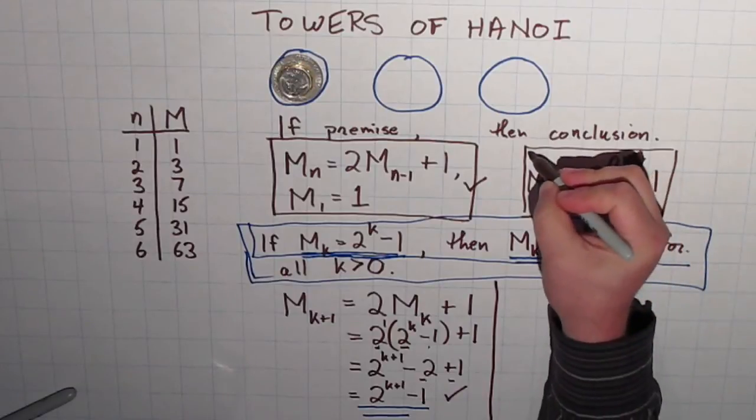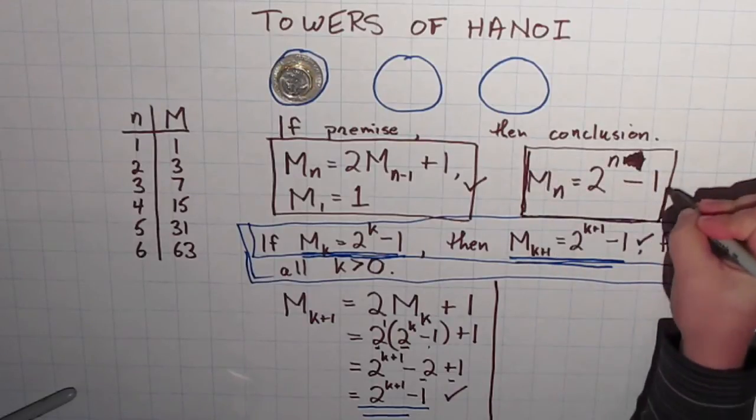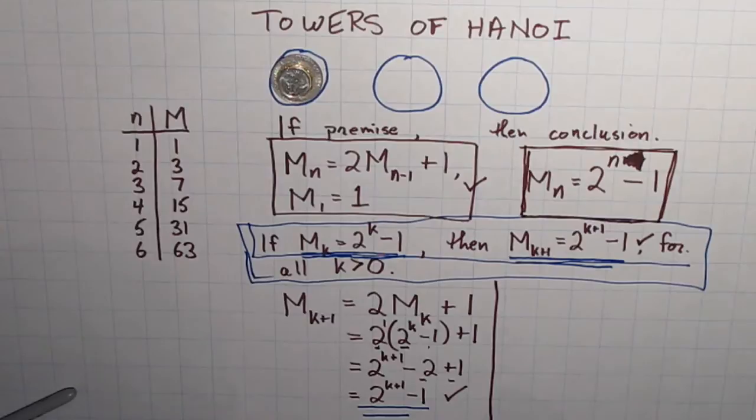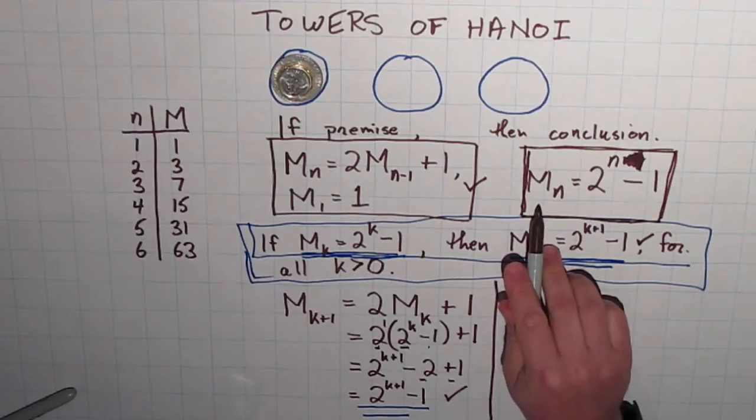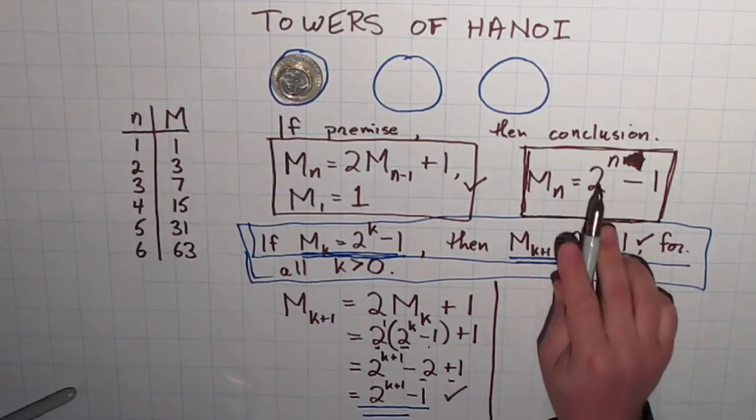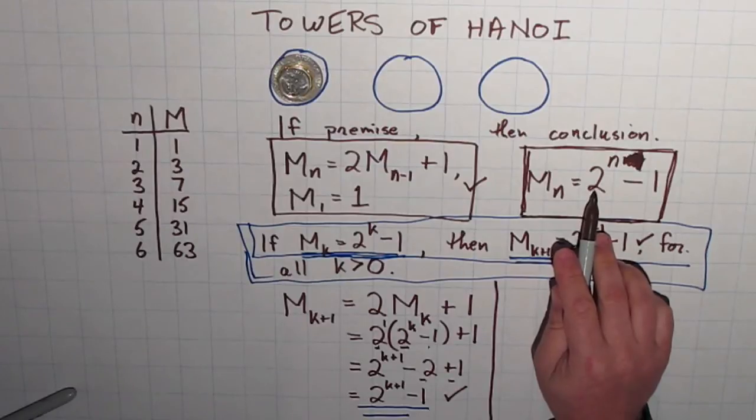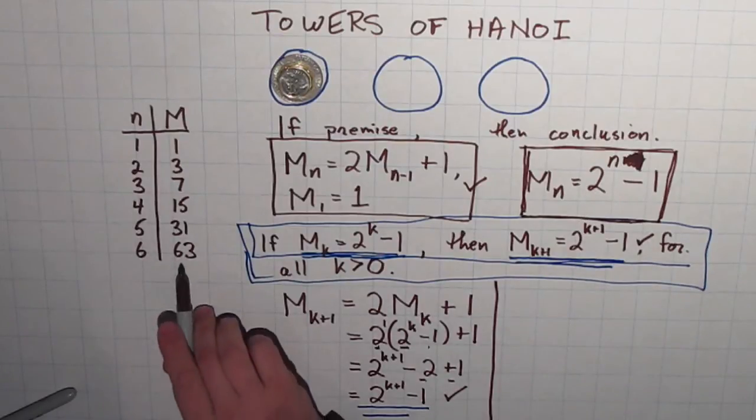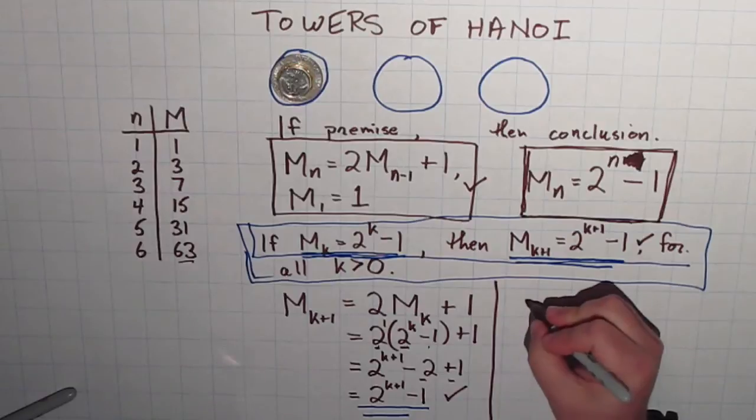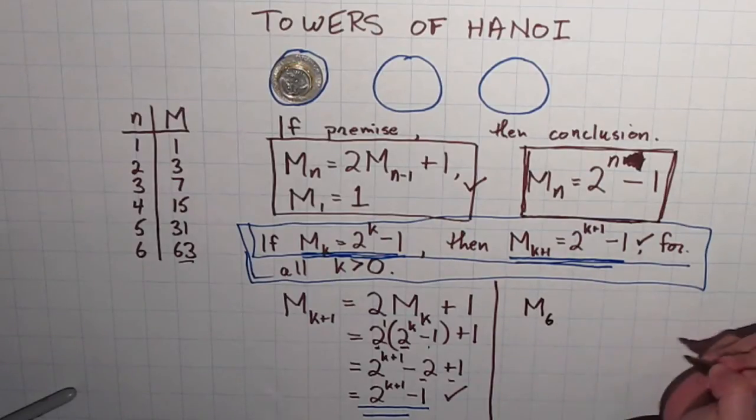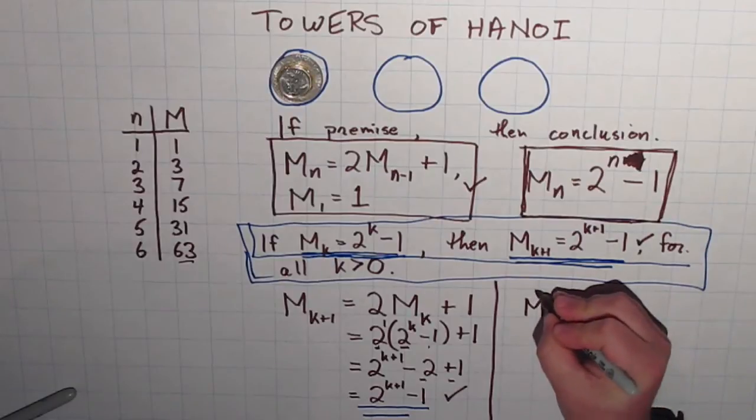I know that this formula here works for 6. If I put 6 into here, this produces the correct number. 2 to the 6 is 64 minus 1 is 63. And that's it right there. So, I do know that that formula works for n is equal to 6. So, M_6 is true.